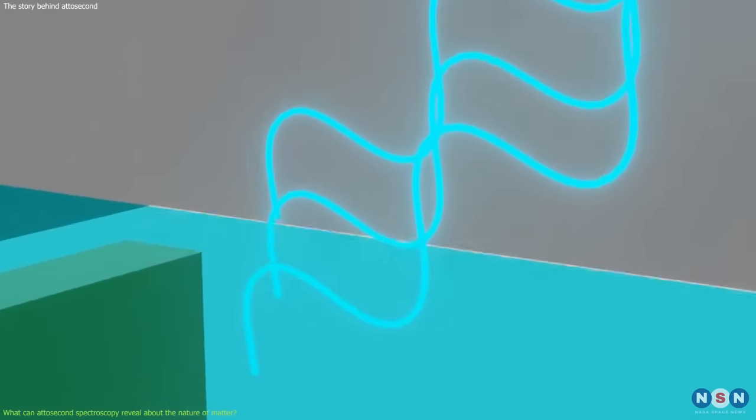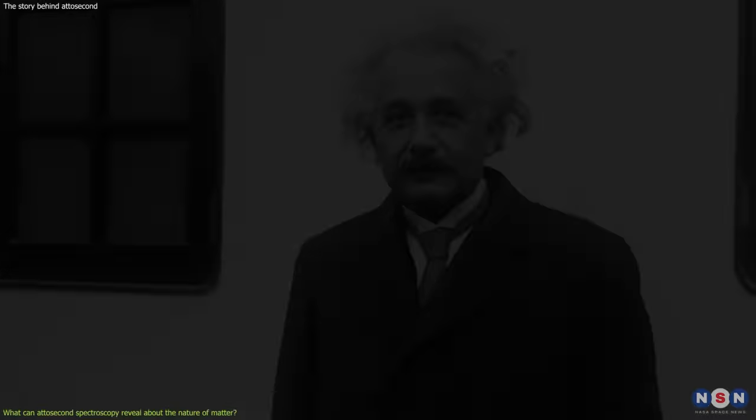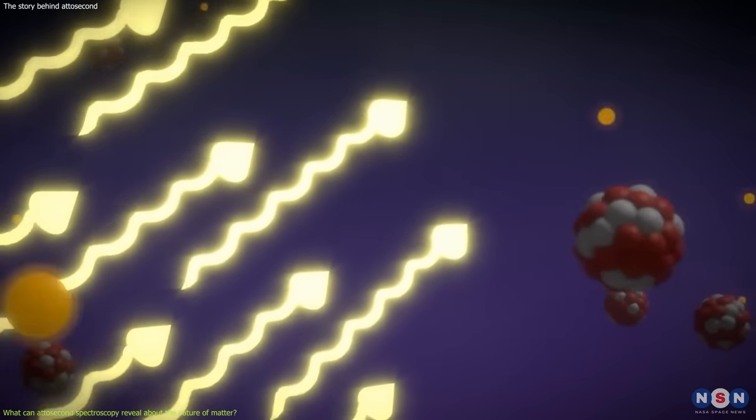The photoelectric effect is when light hits a metal and ejects electrons from its surface. This phenomenon was explained by Albert Einstein in 1905, who showed that light behaves like a stream of particles called photons, each carrying a discrete amount of energy that depends on its frequency.